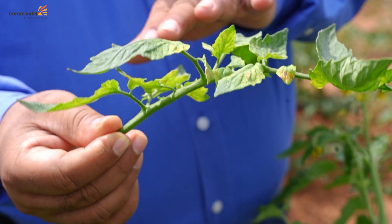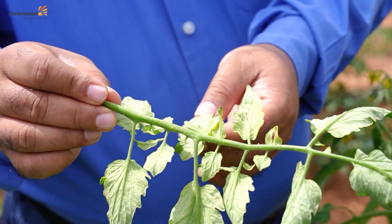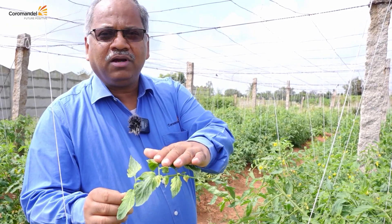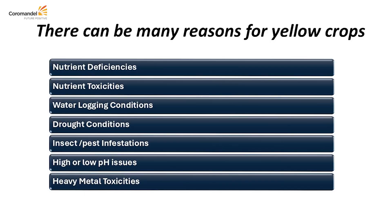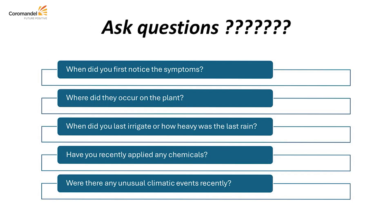To summarize, yellowing of the plant may be due to various factors like disease and pest infestation, nutrient deficiency, nutrient toxicity, waterlogging, drought, or insect pest resistance. We should not jump to conclusions and immediately apply nutrients, fungicides, or pesticides. We need to look into why the plant is yellow, where the symptom is appearing, and when it occurred.